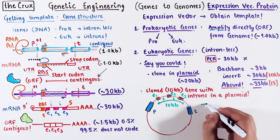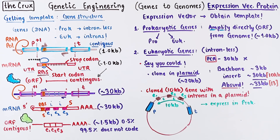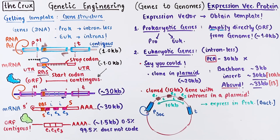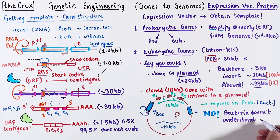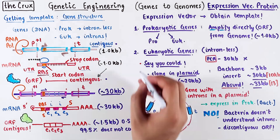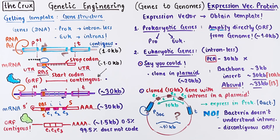Now let's suppose you express this in a bacteria. The promoter in this plasmid will be compatible with the bacterial RNA polymerase, which may make a 10 kb mRNA from it. Will it make your desired protein, even if you have the bacterial ribosome binding site on the mRNA? The answer is no. Bacteria do not understand introns or discontiguous ORFs, since they don't have introns — they don't have the splicing enzymes to understand this language.